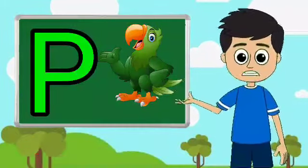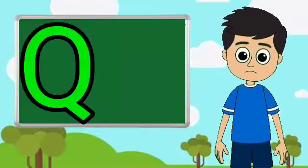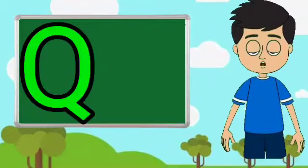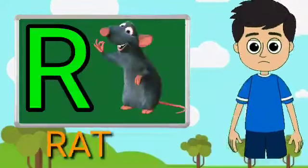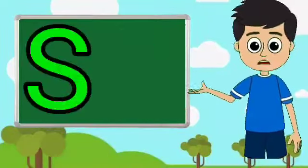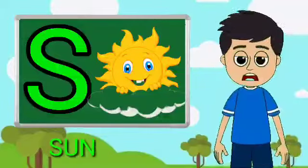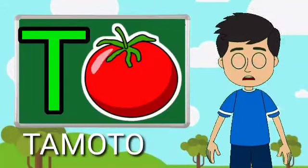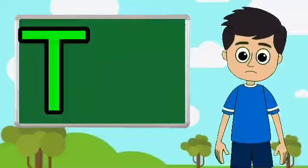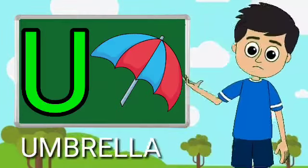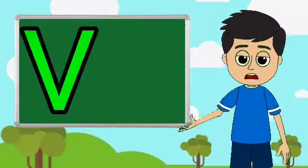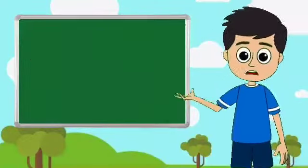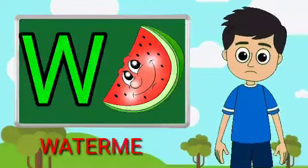E for parrot, U for tune, R for rat, S for sun, E for tomato, U for umbrella, E for band, W for watermelon.